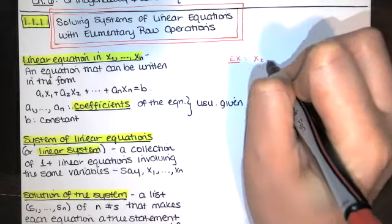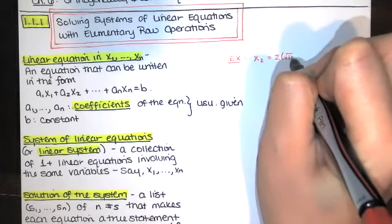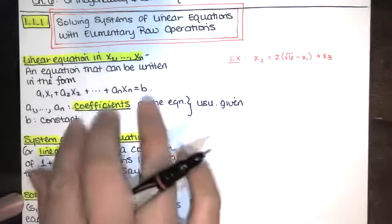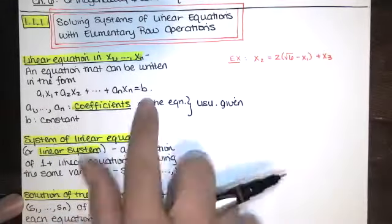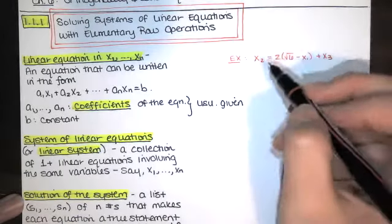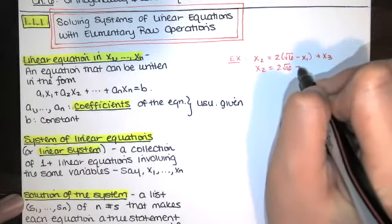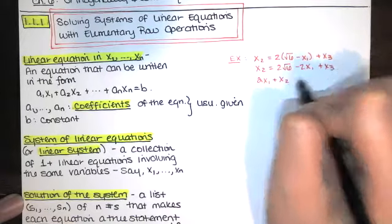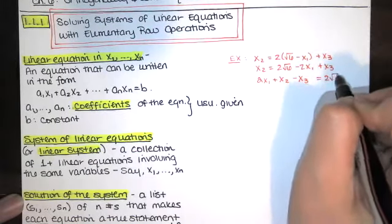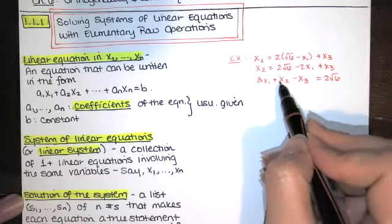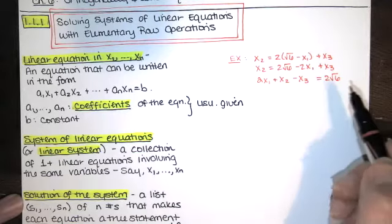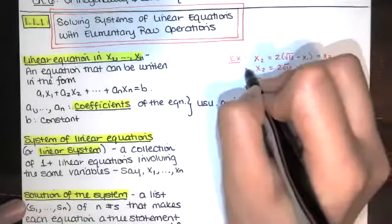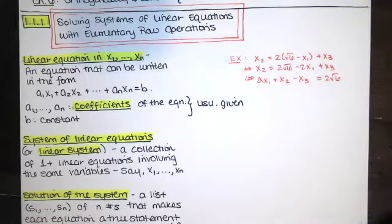Here's an example: X₂ = 2√6 − X₁ + X₃. That turns out to be a linear equation. It's not already written in standard form, but we can rewrite it by distributing the two, then adding 2X₁ to both sides, then subtracting X₃. We get: 2X₁ + X₂ − X₃ = √6. So a₁ = 2, a₂ = 1 (implied), a₃ = −1, and b = √6. Since we can write it in standard form, this is a linear equation in X₁, X₂, and X₃.